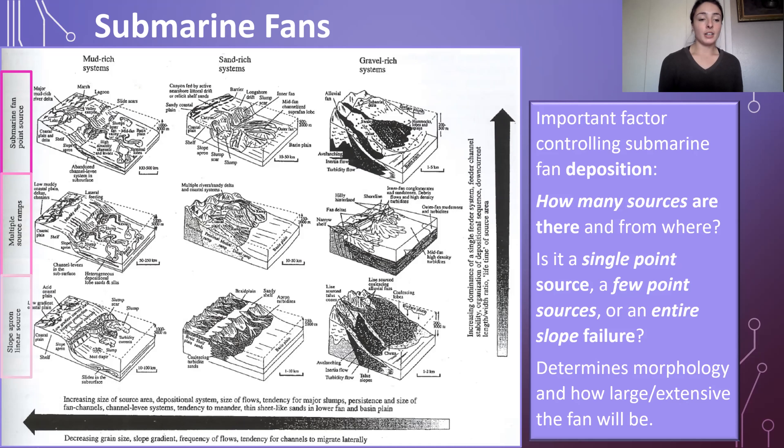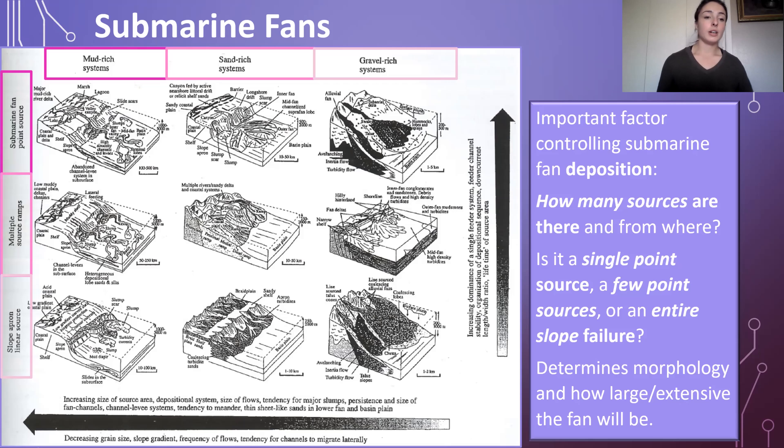We can already see greater elongation in single or multiple point source systems compared to entire slope failures. In single point source systems a more confined channel allows sediment to travel over a longer area, whereas in slope failures the entire slope moves, producing a wider but shorter deposit. Moving to the right in the figure, larger grain sizes produce wider and shorter systems, because coarser grains deposit first while mud and silt-sized grains stay in suspension longer and travel further.